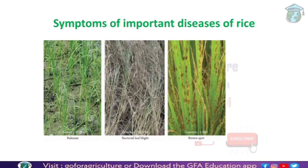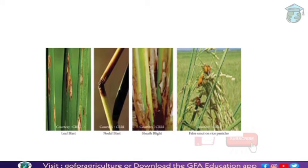Now let's start pest monitoring. These are the symptoms you can see. These are major diseases: bacterial leaf blight, brown spot, leaf blast, nodal blast, sheath blight, and false smut on the weed panicles.